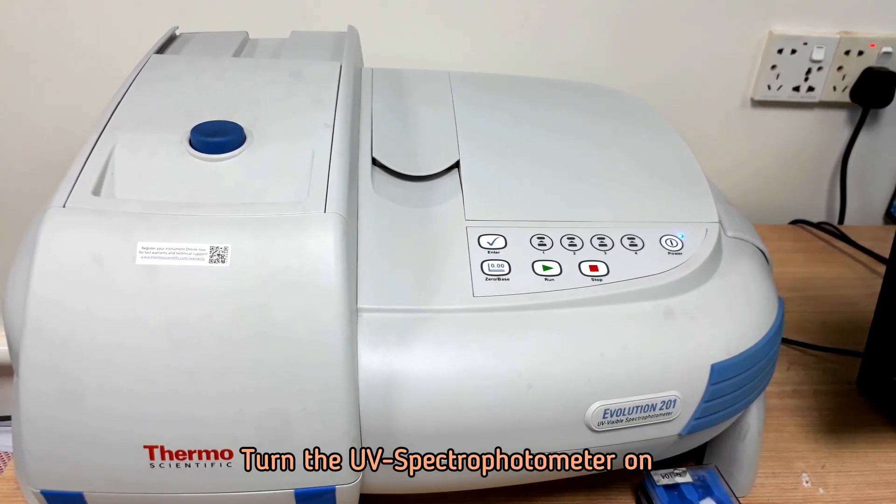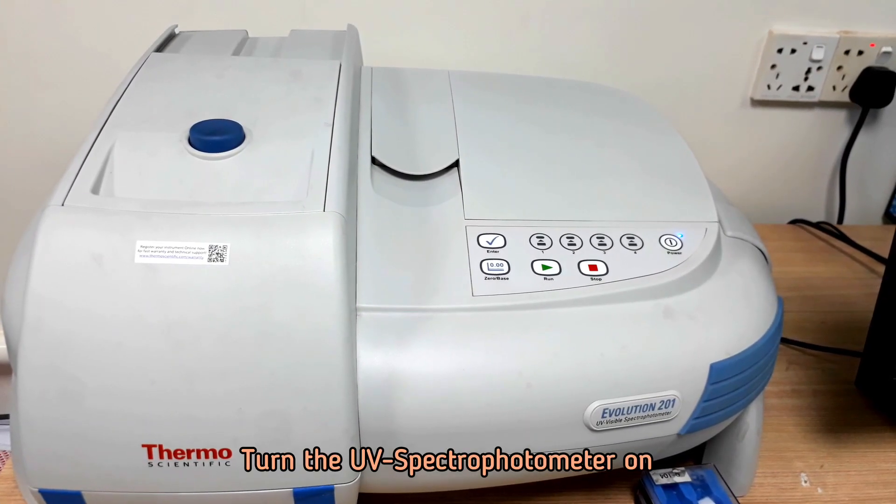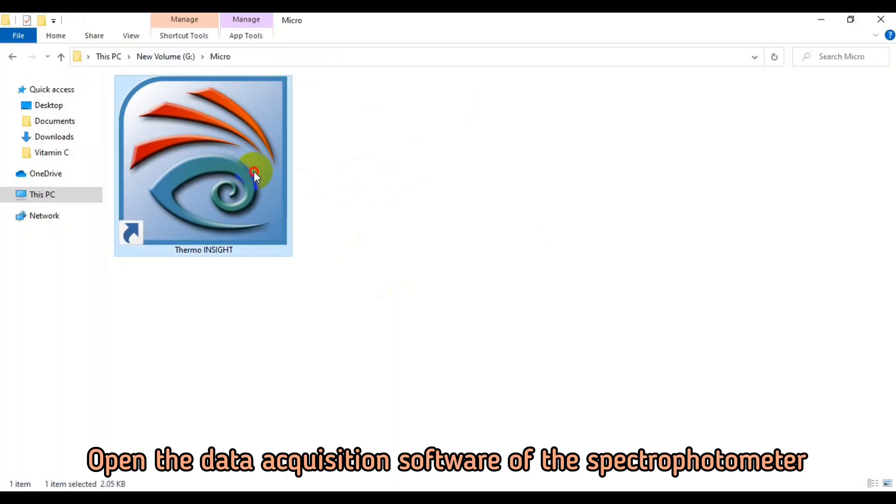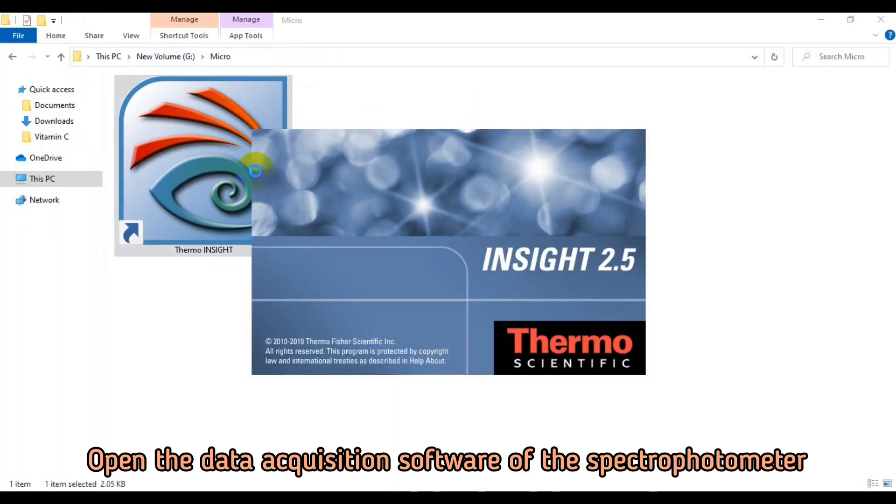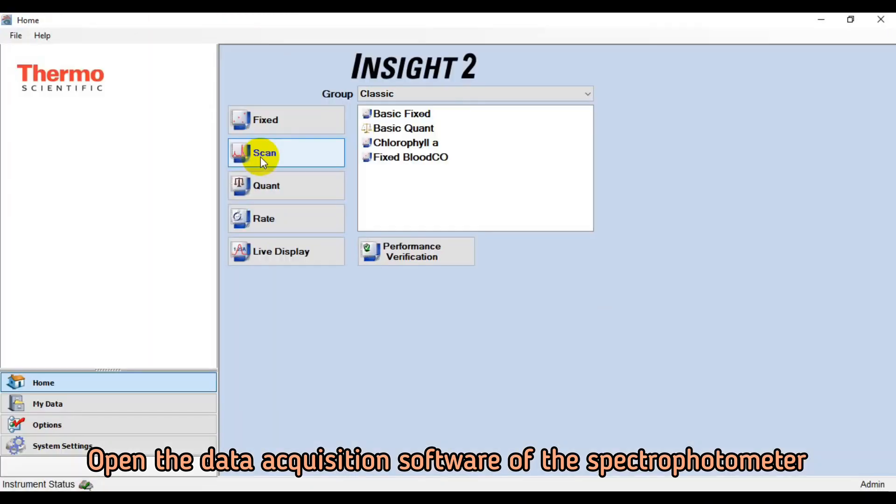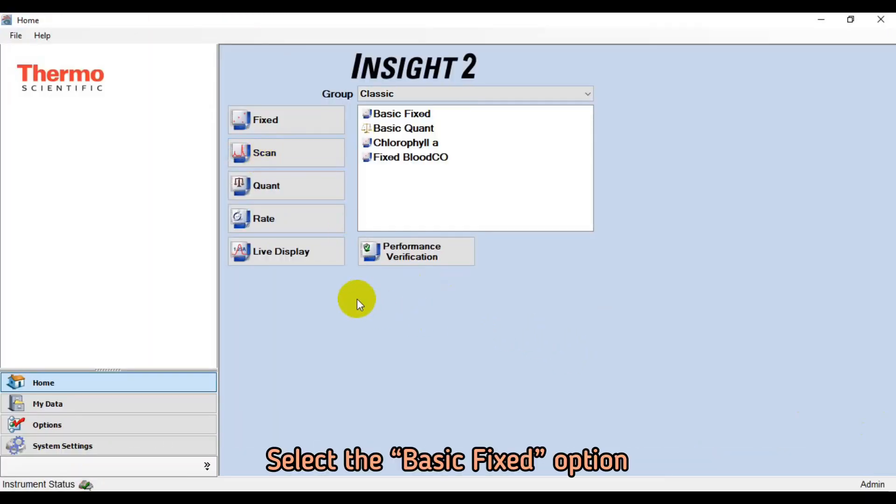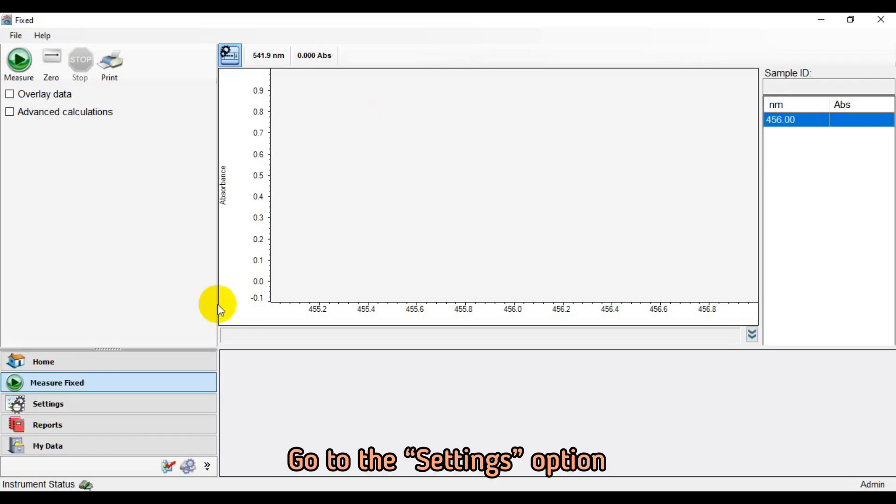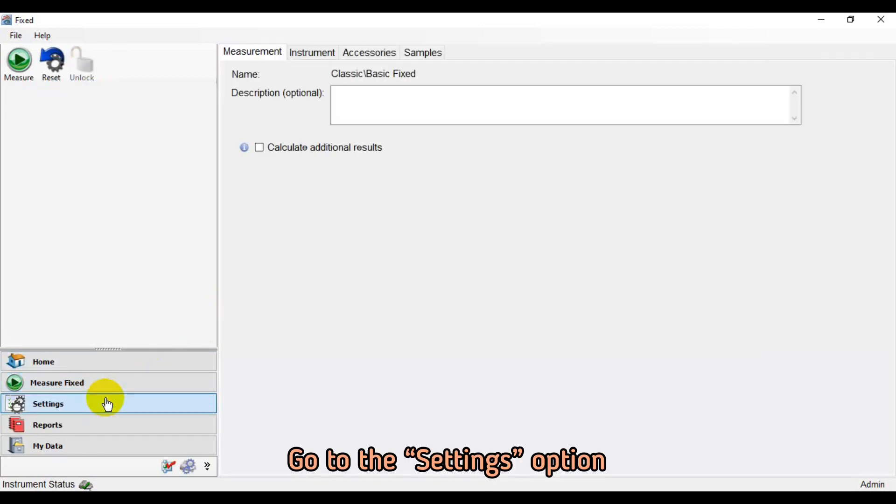Turn the UV spectrophotometer on. Open the data acquisition software of spectrophotometer. Select the Basic Fixed option. Go to the Settings option.